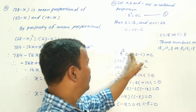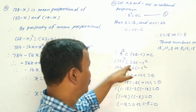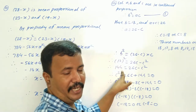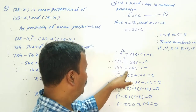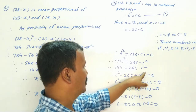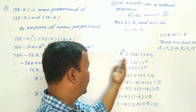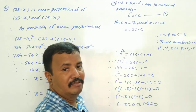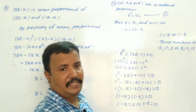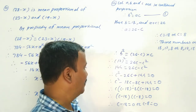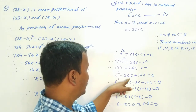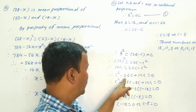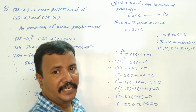Now B squared equals (26 minus C) into C. So 12 squared, which is 144, equals 26C minus C squared. Rearranging gives the quadratic equation: C squared minus 26C plus 144 equals 0. We need two numbers that add to 26 and multiply to 144.